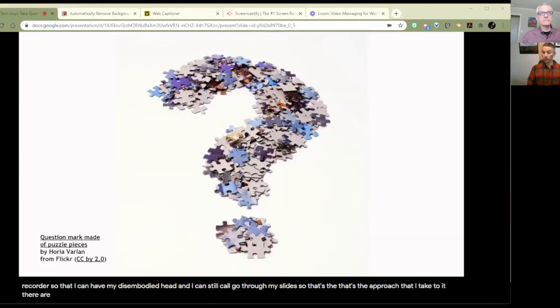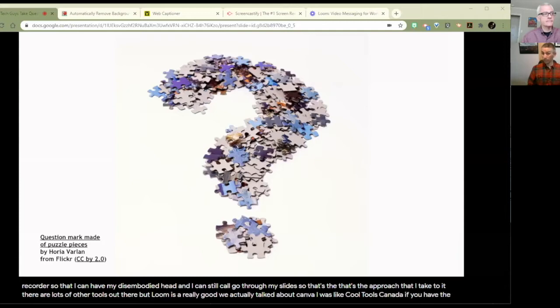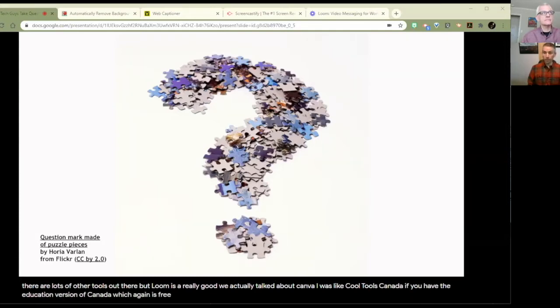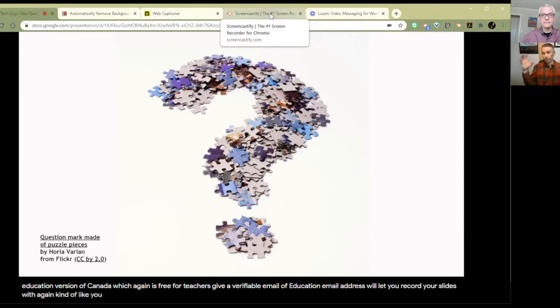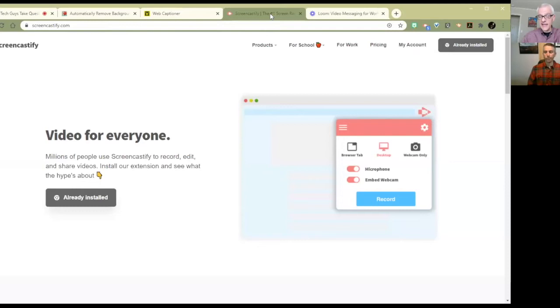So check out Loom.com. That's a good option because it will give you that, for lack of a better term, disembodied head floating in the bottom right or bottom left corner of your screen, if you like that. And then what I do, if you want to use it with Google Slides, I just make my Google Slides full screen and launch the Loom video recorder so that I can have my disembodied head and I can still toggle through my slides. Ruth, I'm a big fan myself of Screencastify. I feel like we mentioned this every few episodes, but they're great tools.